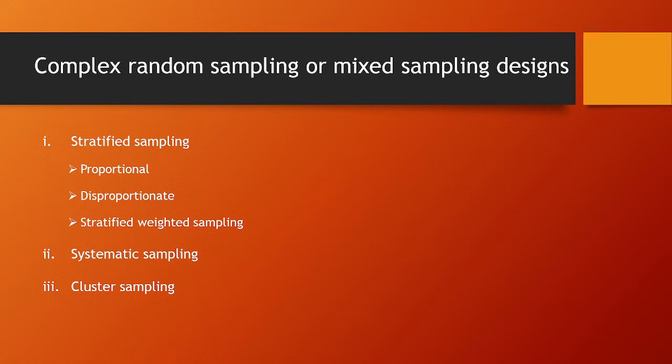We divide the population into groups called clusters. We have many clusters. In this case, if we want to choose any clusters, we select the required sample size. That is cluster sampling.